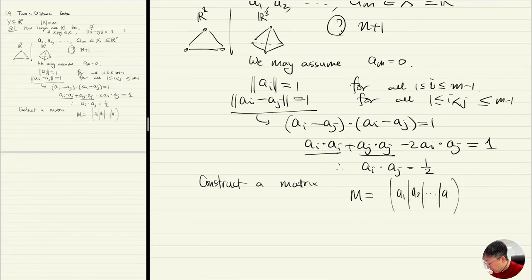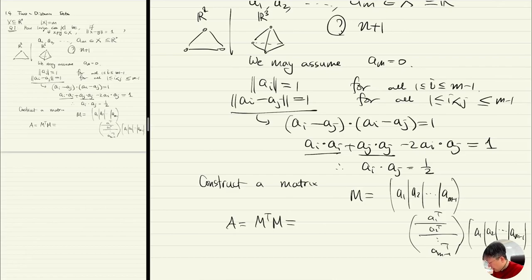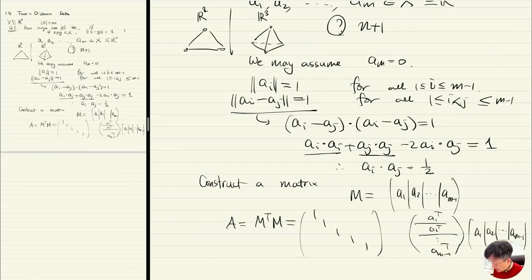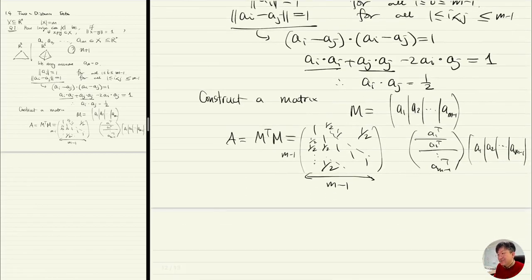Now what I do is construct a matrix M consisting of all these vectors. Look at the matrix M^T·M, which has rows a_1^T, a_2^T, ..., a_{m-1}^T and columns a_1, ..., a_{m-1}. If I multiply that, a_i^T·a_j equals 1/2 if i ≠ j and 1 if i = j. So this is a matrix of size (m-1)×(m-1) with all diagonal entries 1 and all off-diagonal entries 1/2.